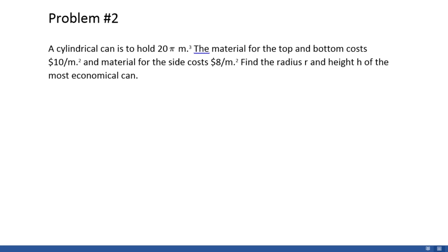In this problem, we have been asked to determine the radius r and the height h of the most economical can, given the fact that the material for the top and the bottom costs $10 per meter squared, and the material for the side costs $8 per meter squared. The can is supposed to hold a total of 20π cubic meters.